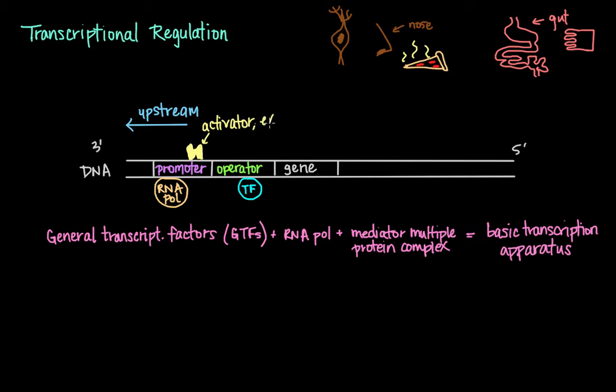An example of an activator is the catabolite activator protein, or CAP. And this protein activates transcription of the lac operon in E. coli.